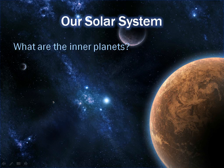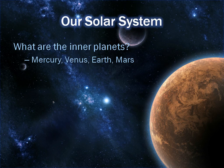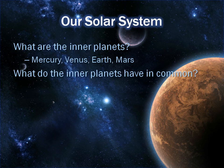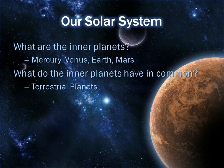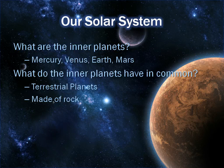The next topic is what are the inner planets? They are Mercury, Venus, our very own Earth, and Mars. The inner planets have a few things in common: they are all called terrestrial planets. That's because they have terrain or land that's visible, whereas the gas giants are composed of gas with an iron core in the center, but mainly gas. The inner planets are made of rock and are all very, very small.